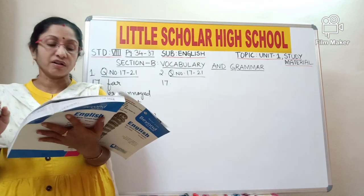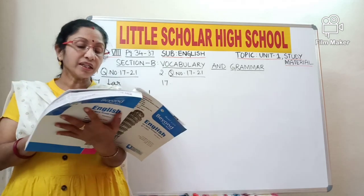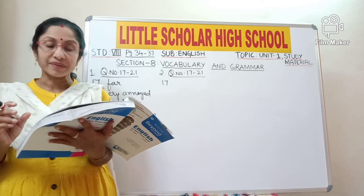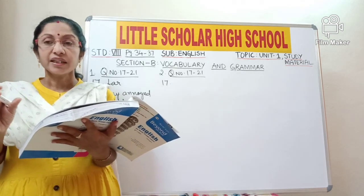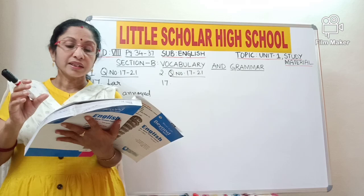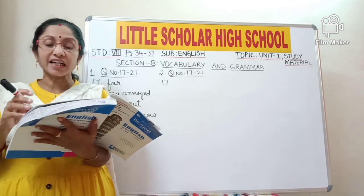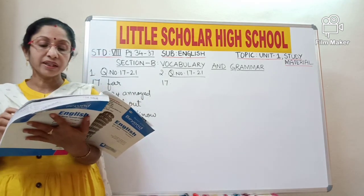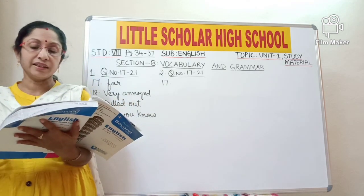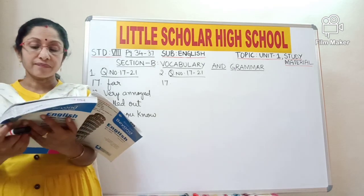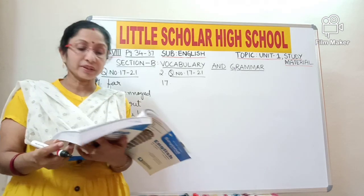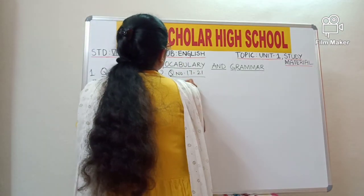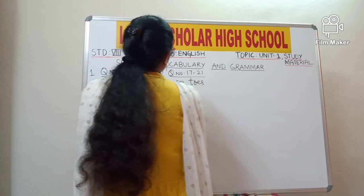Question number 17: 'After that I am always on my toes.' Pick out the idiom which means 'busy' from the underlined sentence. An idiom is a group of words which has its own meaning that does not give the exact meaning of the individual words. The phrase 'on toes' represents 'busy'. So 'on toes' means busy.